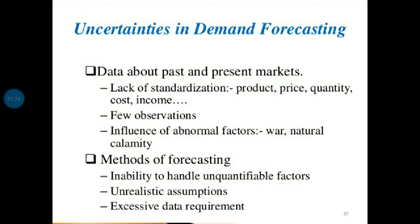This question may be asked for seven marks in the form of a short note. The first area of uncertainty is data about past and present. The analysis of past and present market, which serves as the springboard for the projection exercise, may be affected by the following inadequacies or uncertainties. After analyzing the data, there are three major uncertainties found in past and present market analysis.